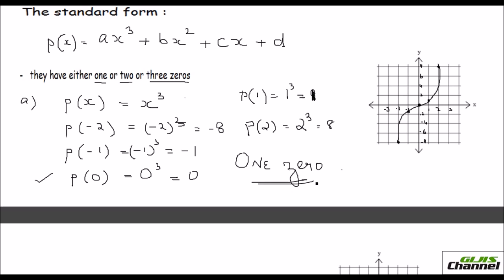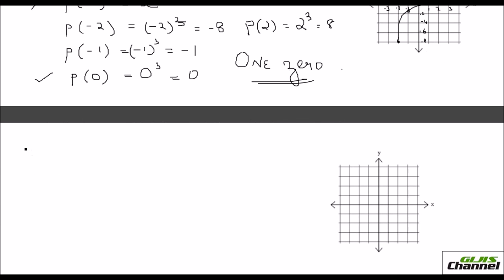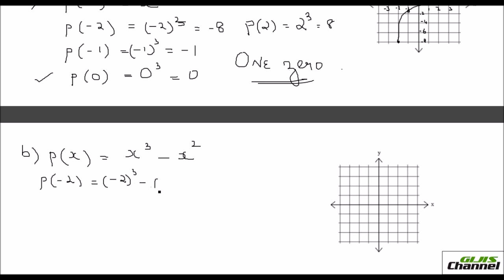Now let's see how you get 2 zeros and 3 zeros. For that I take P of X as X cubed minus X squared — simple examples. Let's solve for this by substituting X values. For minus 2: it is minus 2 the whole cube minus minus 2 the whole square, that's minus 8 plus 4, so minus of plus 4 is negative 12.